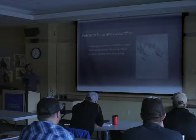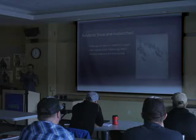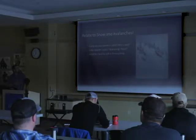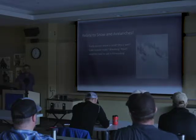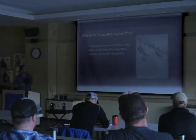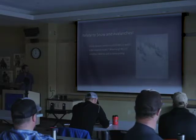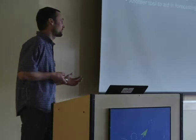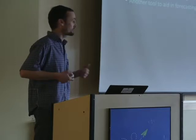We can relate all this to snow and avalanches — and as I pointed out earlier, it's kind of already been done. But we can look at patterns that are going to set up in early season: is it going to be cold and dry, or are we going to get consistent snows? Are we going to have a warm November like we did this year and have a generally stable snowpack? We can look at late season loading events, warming, rain on snow — where we typically see stability just drop and get dangerous situations. And basically, hopefully when all is said and done, we have just another tool in our belt to try to predict when these events are going to happen.